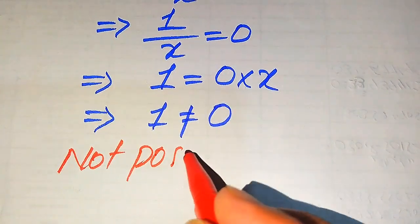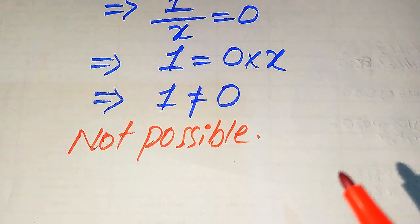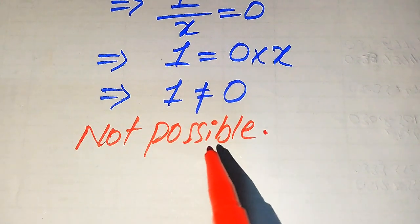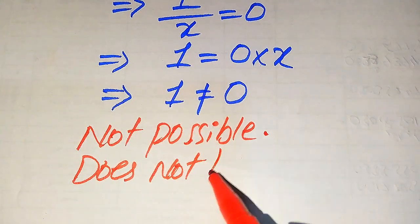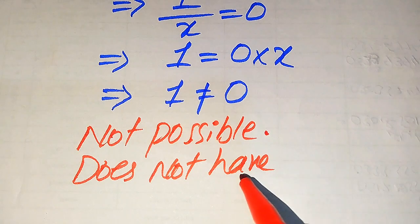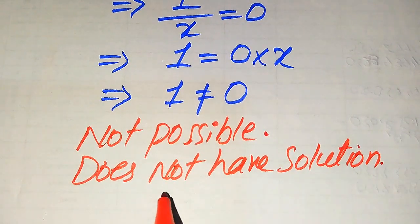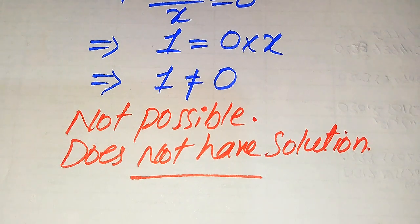Since this is not possible, we again cannot get any value of x. This means the given equation does not have any solution. Our final conclusion is that the solution of this equation does not exist. Thank you so much for watching this video, please subscribe to my channel for more videos.